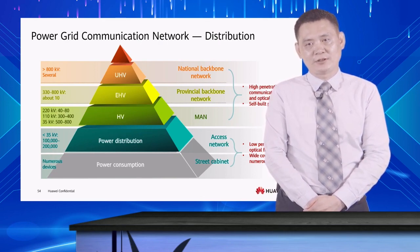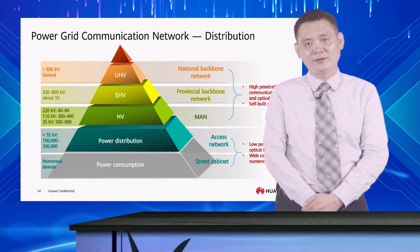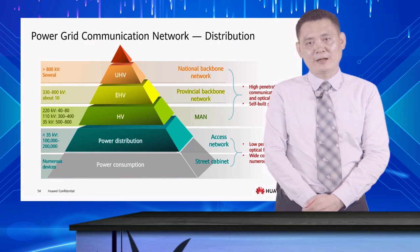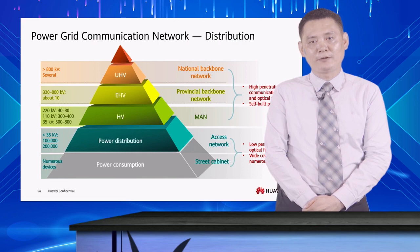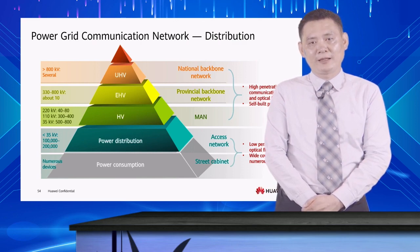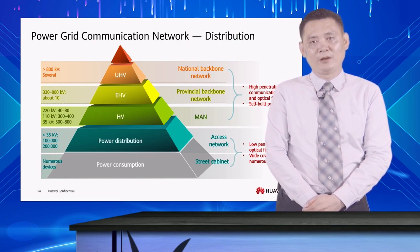High voltage, extra high voltage, and ultra-high voltage scenarios are mainly distributed in the National Backbone Network, Provincial Backbone Network, and MAN. Due to the small number of these nodes, communication can be achieved by deploying optical fibers or building a private network by electric power companies themselves, on which O&M is not complex.